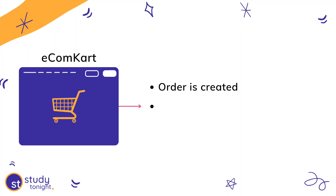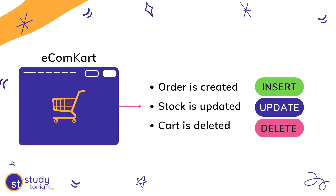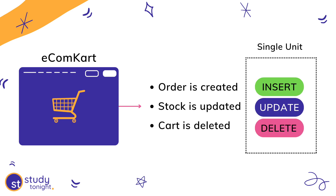For example, if you're using an e-commerce website, when you purchase any item, on successful payment, a new order is created, the product stock is updated, and the cart info is deleted. That is, one insert, one update, and one delete that must act as a single unit of work. Because if some of it passes and some of it fails, the state of the database and the application becomes inconsistent.